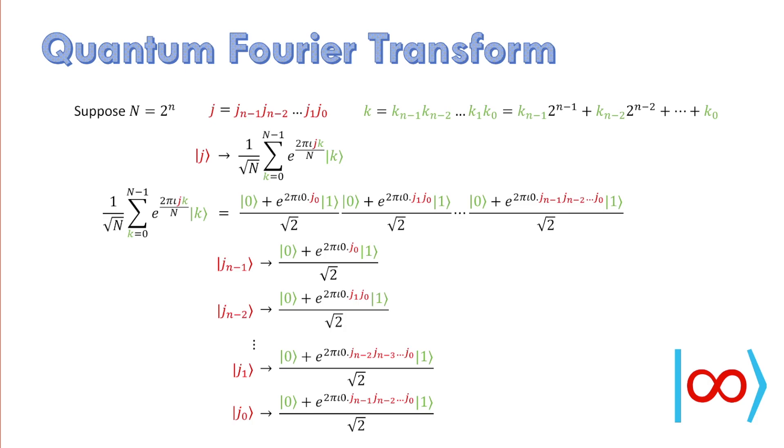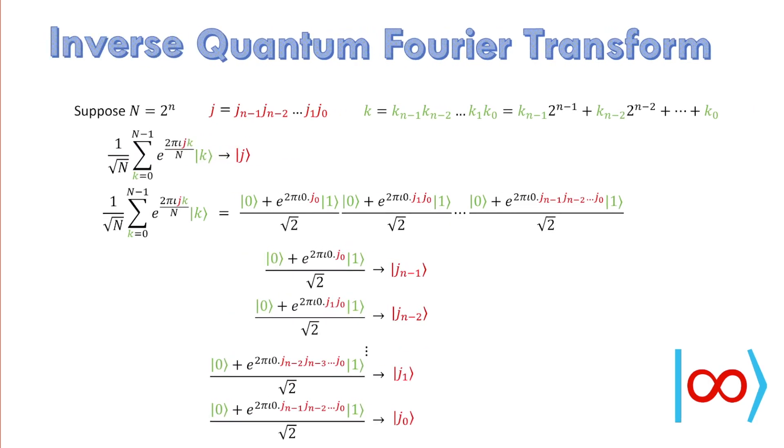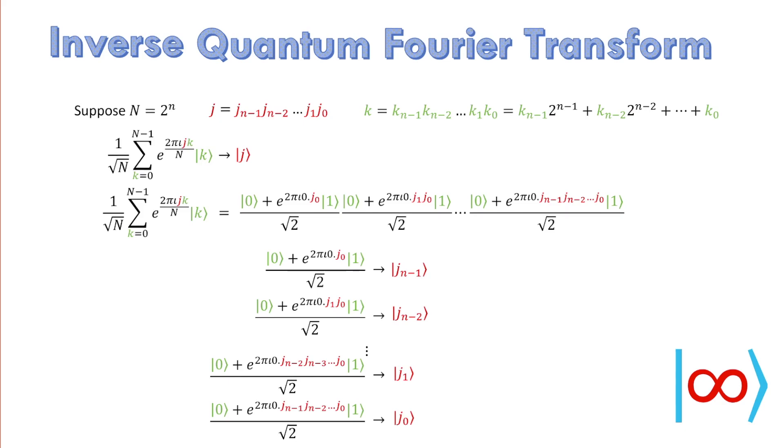As quantum Fourier transform is a unitary operation, it is inverse and its action can be described as if it rotates individual qubits in opposite direction. This reverts the qubits back to their initial state.